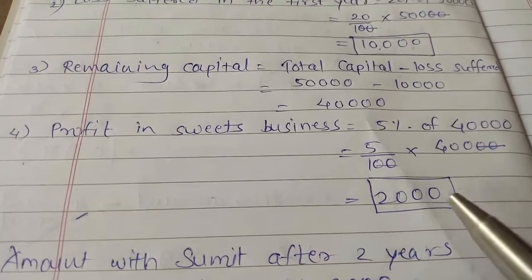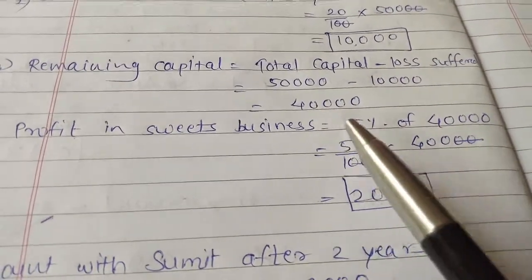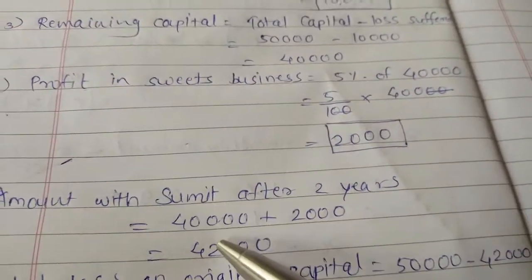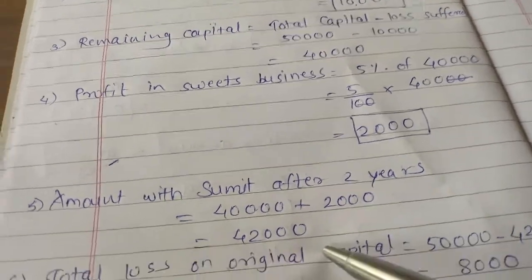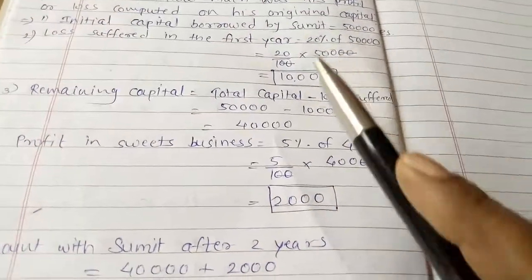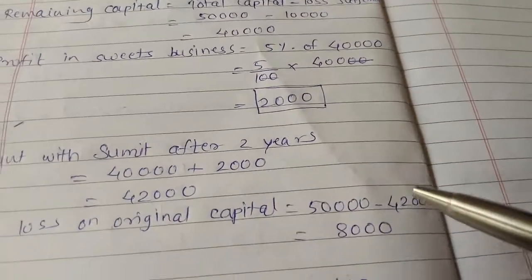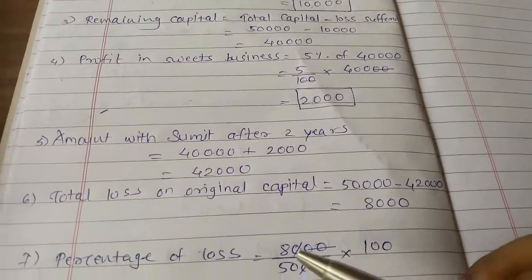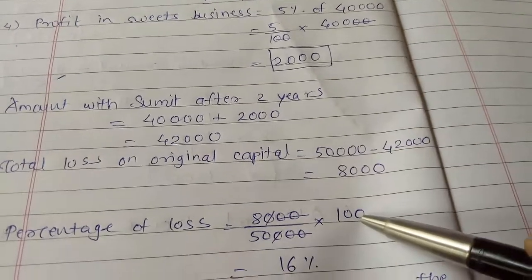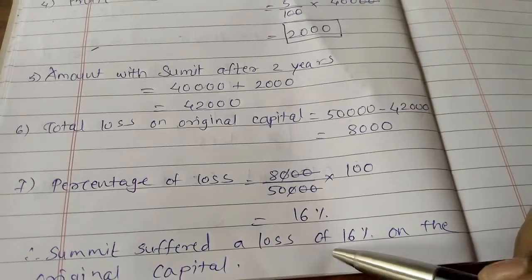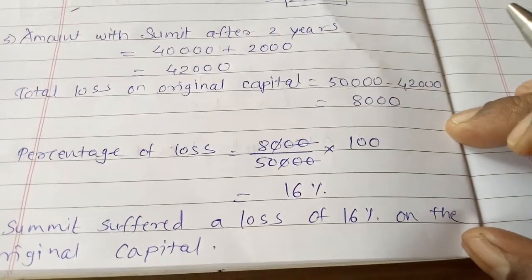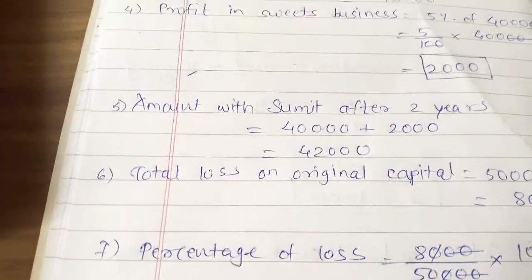The amount with Sumit after 2 years: he had 2,000 profit on 40,000, so 40,000 plus 2,000 equals 42,000 rupees. Total loss on original capital: 50,000 minus 42,000 equals 8,000 rupees loss. Percentage of loss equals 8,000 upon 50,000 into 100, which gives 16%. So Sumit suffered a loss of 16% on the original capital. This covers the first two examples of this practice set; the remaining examples will be seen in the next lecture.